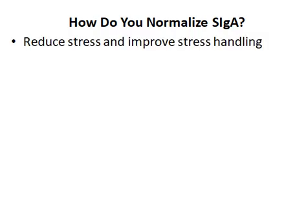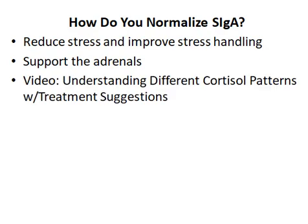So how do you normalize secretory IGA if it is out of balance? If it's low, you definitely want to do a good job of managing stress, and if possible reduce stressors. You might need to support the adrenals in other ways, such as through supplementation. I created a separate video you might want to check out entitled 'Understanding Different Cortisol Patterns,' which also includes treatment suggestions, and I'll include the link to this video in the description below.